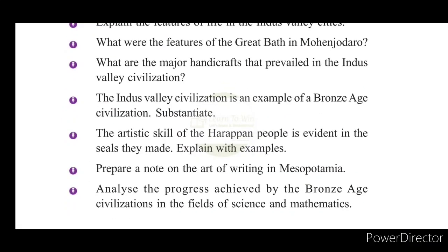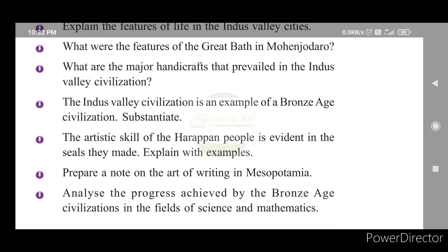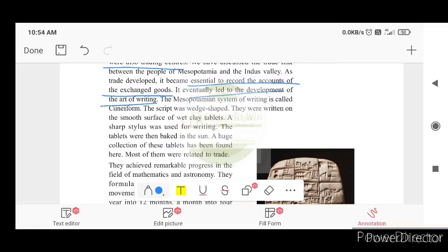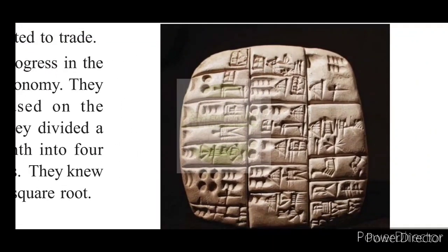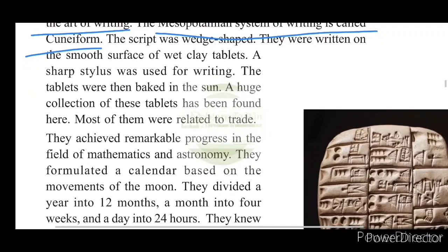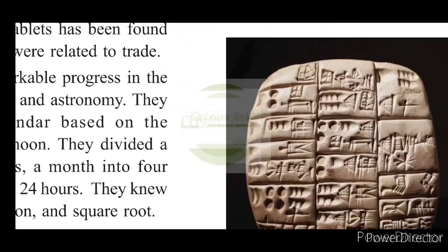Prepare a note on the art of writing in Mesopotamia. The Mesopotamian system of writing is called Cuneiform. The script was wedge-shaped. The scripts were written on the smooth surface of wet clay tablets. A sharp stylus was used for writing. The tablets were then baked in the sun. A huge collection of these tablets has been found.